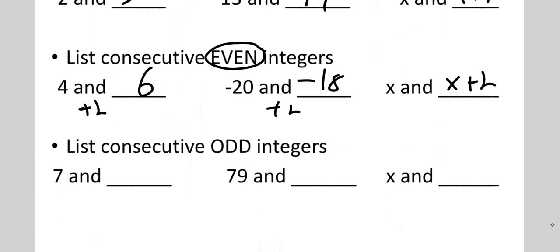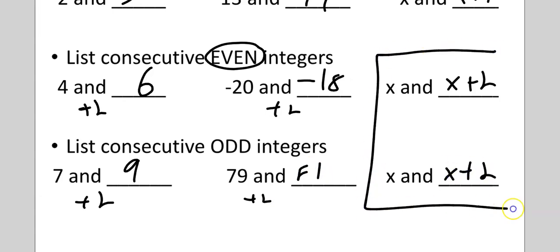Now, odd integers. Think about it. Seven becomes nine, seven plus two. Seventy-nine plus two is 81. And this is going to be X plus two. So these are exactly the same because this variable could be an even or an odd number. But to get to the next even or odd number, regardless, you must add two.